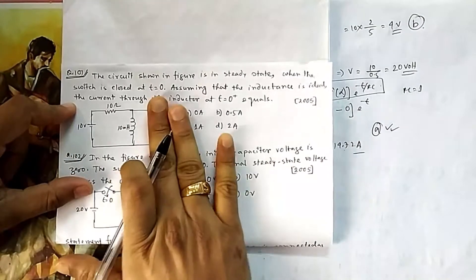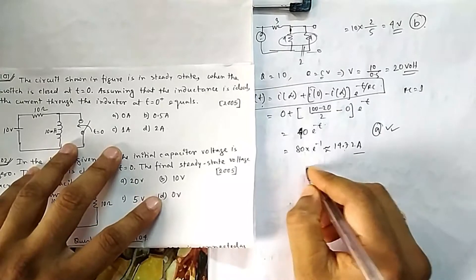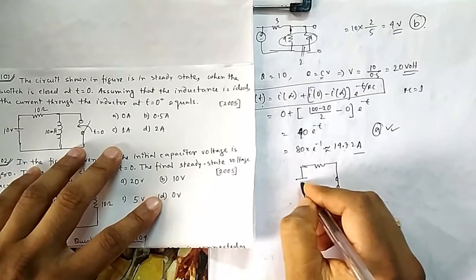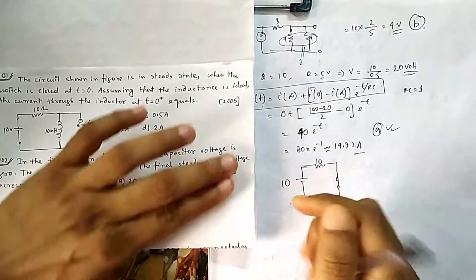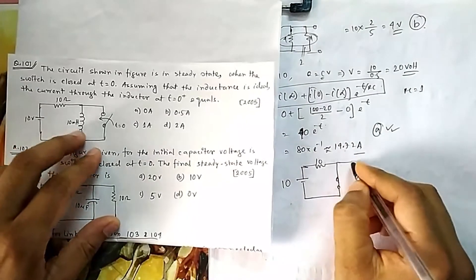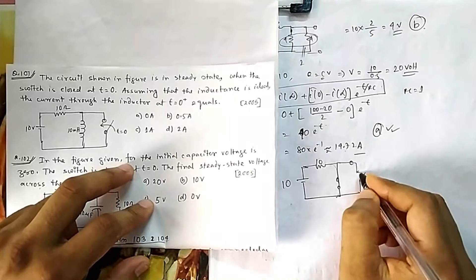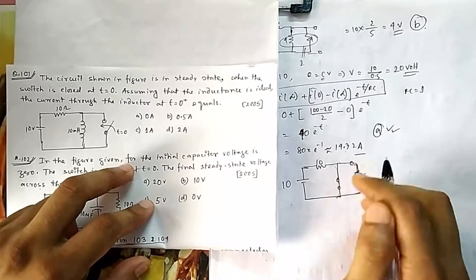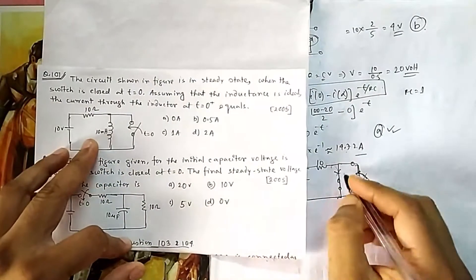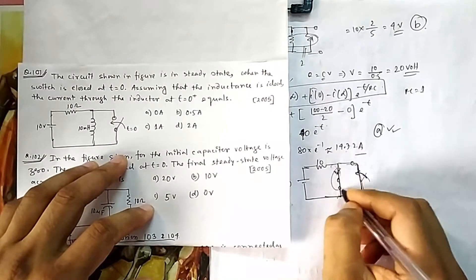Since before the switch was closed the circuit was in steady state, all current was flowing through there. Before t equal to 0, the inductor is short-circuited in steady state. So before the switch is closed, this path is already shorted. When you close the switch, there will be another shorted path, so both paths are shorted and current will go through — there will be no change in current.